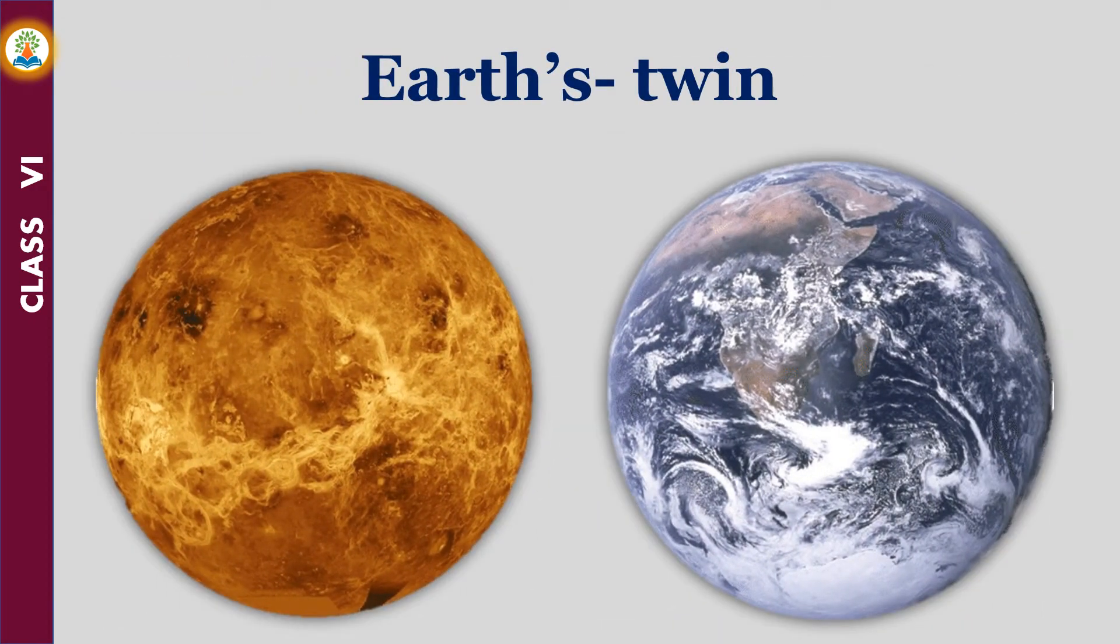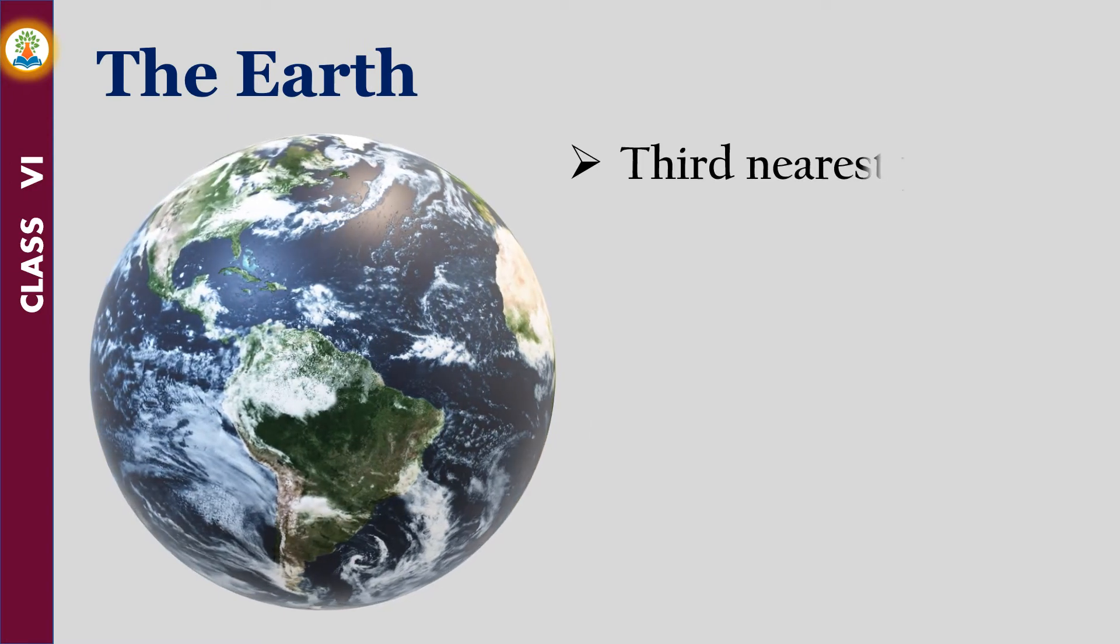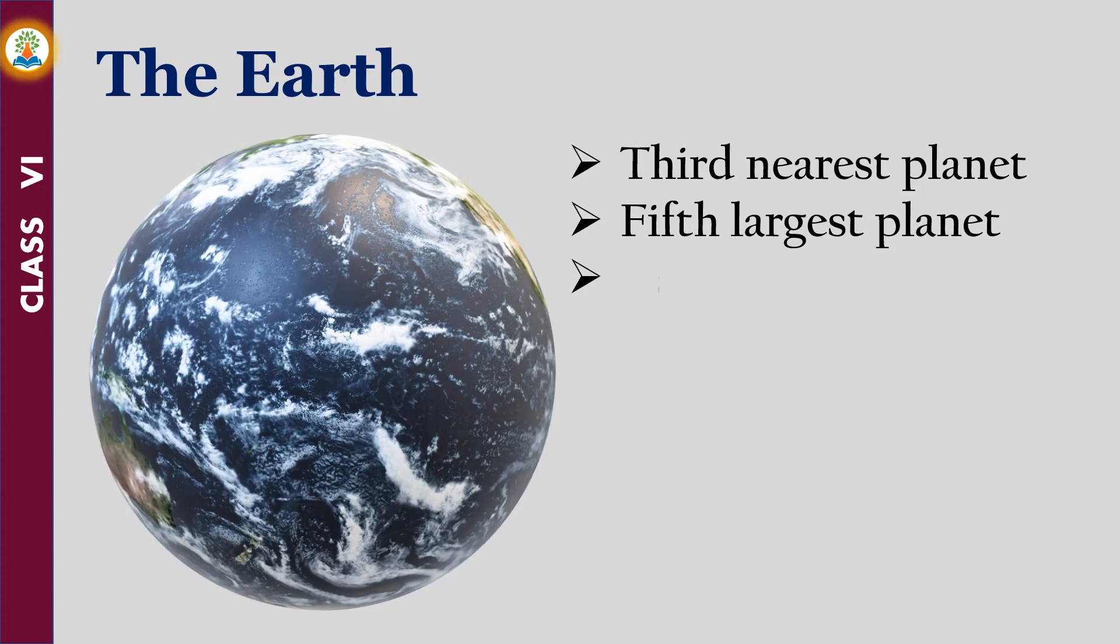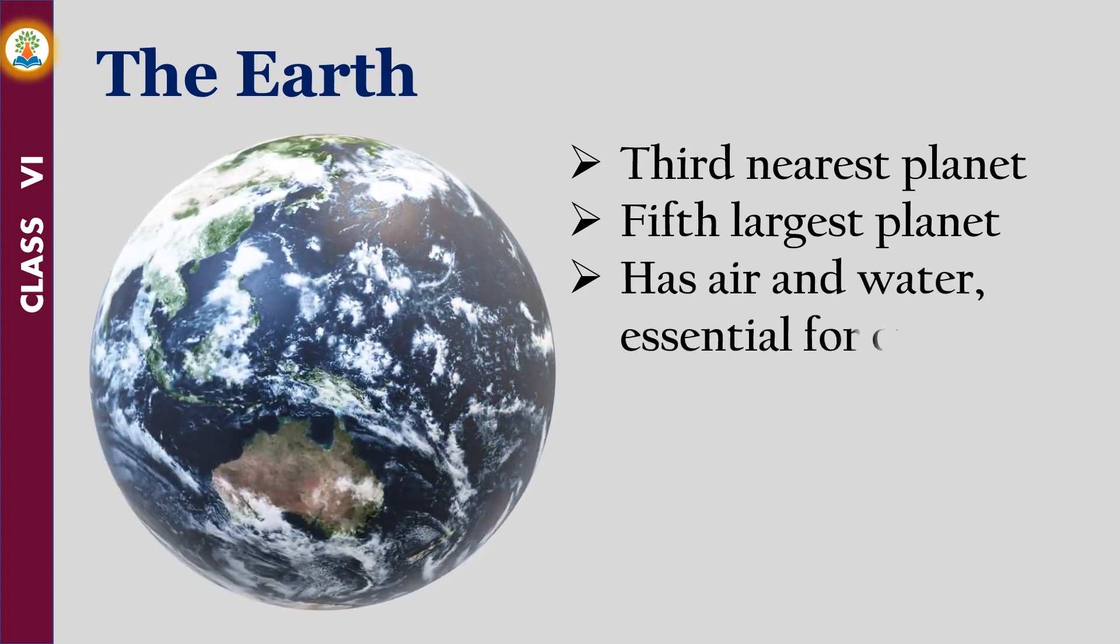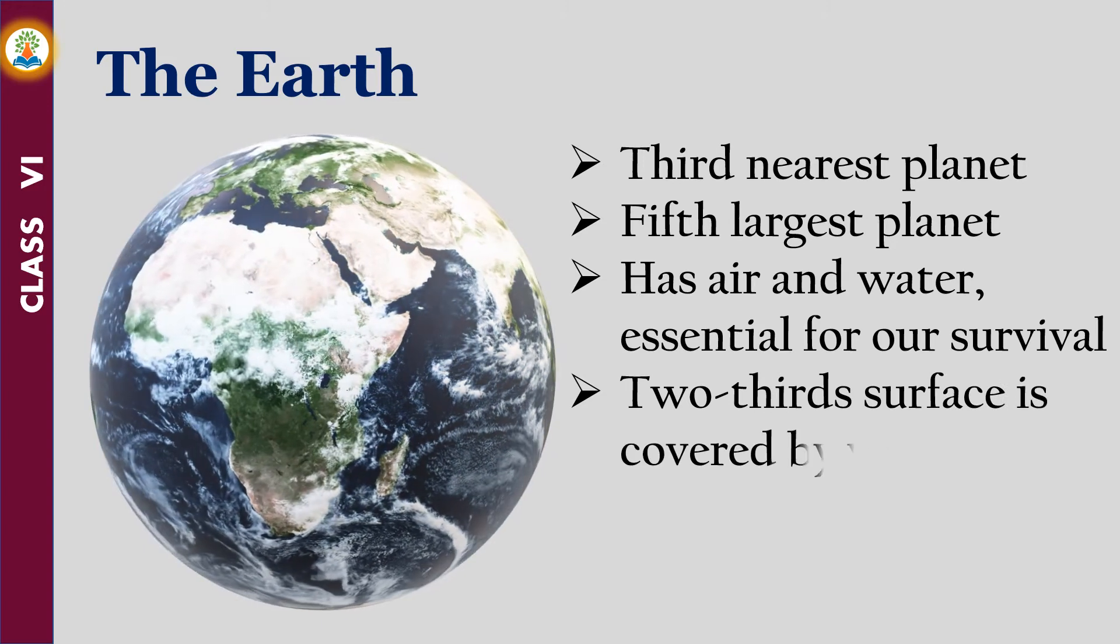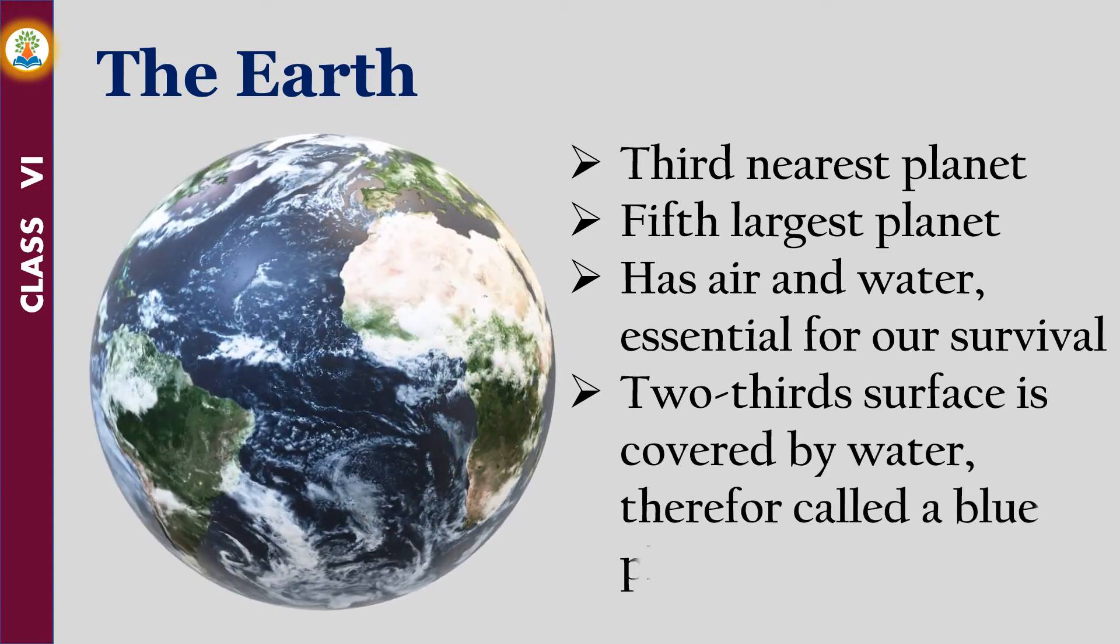Venus is considered as Earth's twin because its size and shape are very similar to that of the Earth. Earth is the third nearest planet to the sun. In size, it is the fifth largest planet. It has air and water which are essential for our survival. Its two-thirds surface is covered by water, therefore it is called a blue planet.